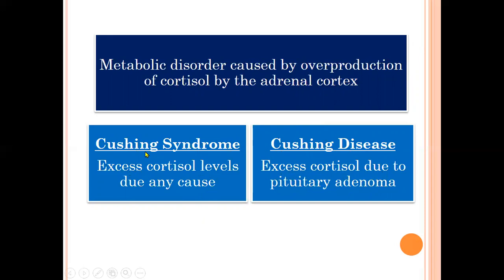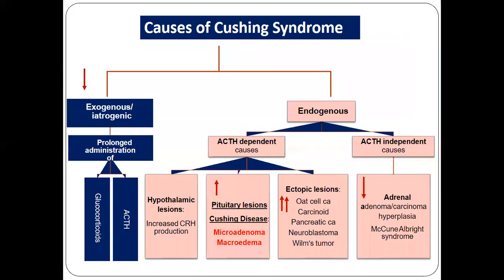You may be asked the causes of Cushing disease or the causes of Cushing syndrome — do not confuse these two terms. The causes of Cushing syndrome include exogenous steroid administration (iatrogenic), which is the most common cause, and endogenous causes. Endogenous causes are further subdivided into ACTH-dependent and ACTH-independent categories.